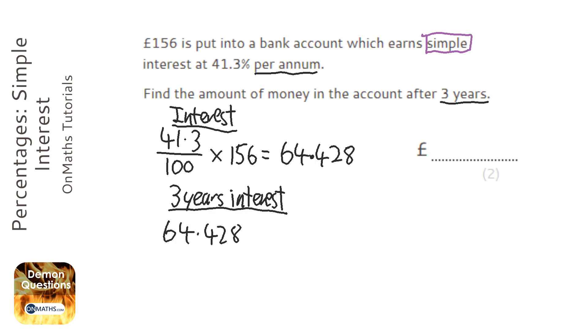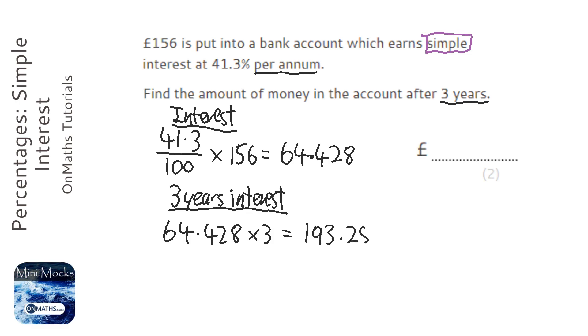64.428 times 3, and it gives me 193.284. You don't want to round right up until the end, so don't round anything until your final answer.